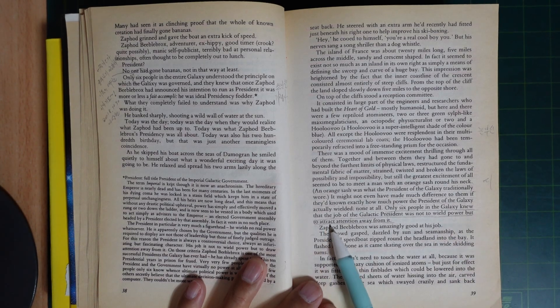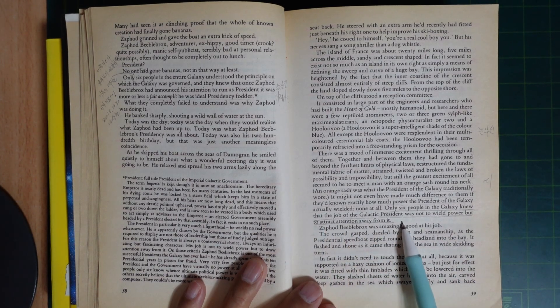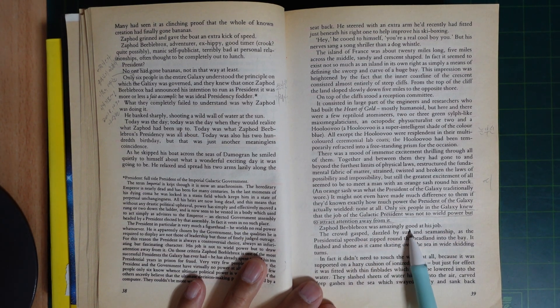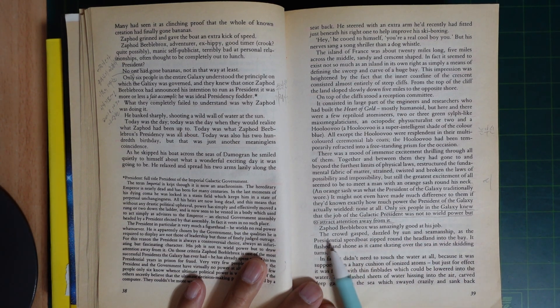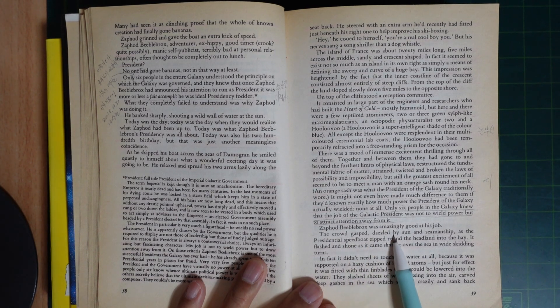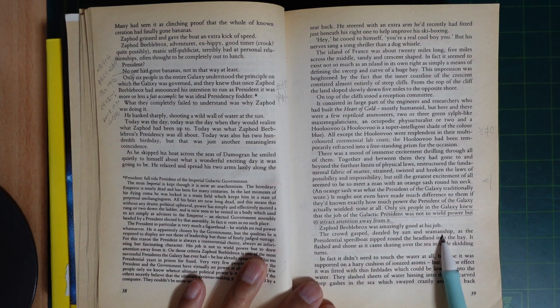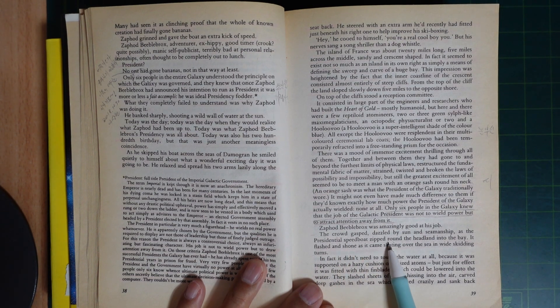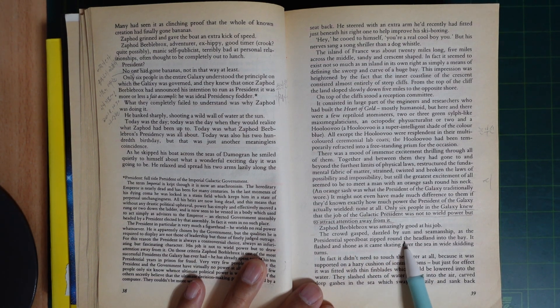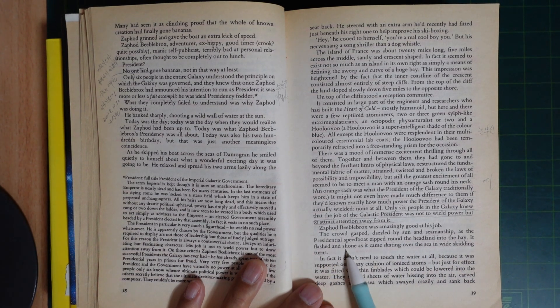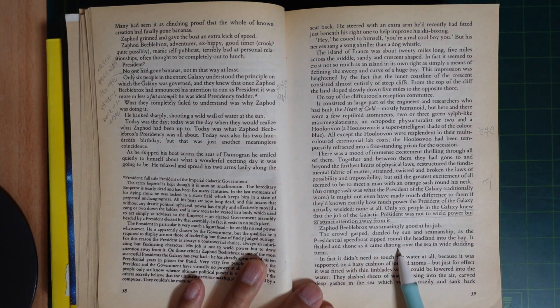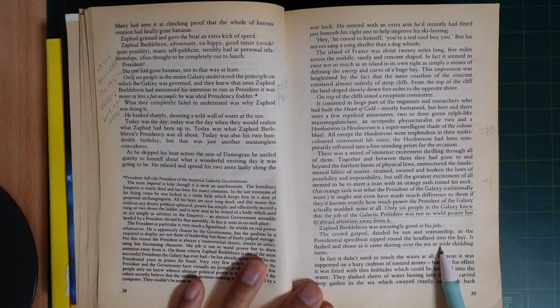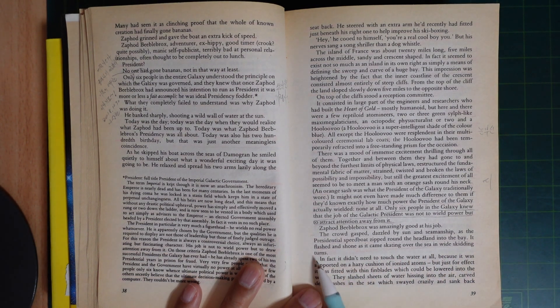The power, but to attract the attention away from it. Zaphod Beeblebrox was amazingly good at his job. The crowd gasped, dazzled by sun and seamanship as the President's speedboat zipped around the headland into the bay. It flashed and shone as it came skating off the sea in wide, skidding turns.